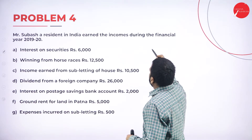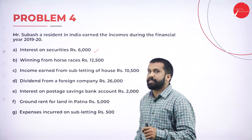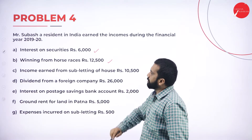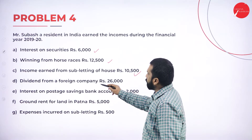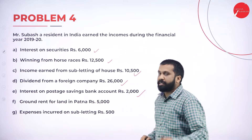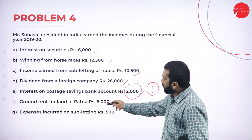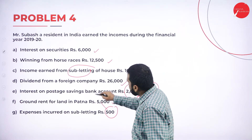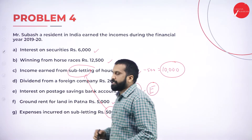Now Problem number four. Mr. Subash, a resident in India, earned the following income during financial year 2019-20. Interest on security 6,000 — taxable (but if it is UTI, we will not consider). Winning from horse race above 10,000 — consider. Income earned from subletting of house — consider; if there are any adjustments, we must minus. Dividend from foreign company — fully taxable. Indian company up to 10 lakh exempted. Interest on post office up to 3,500 exempted — he has 2,000, so exempted. Ground rent on land in Patna — completely taxable.